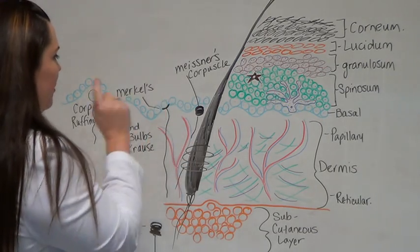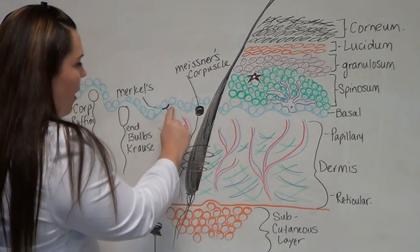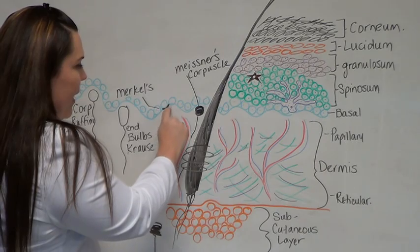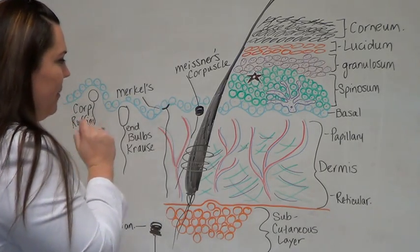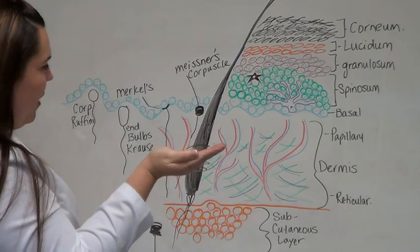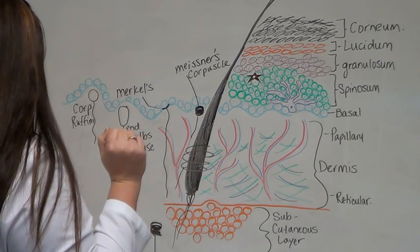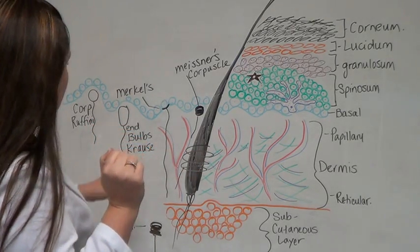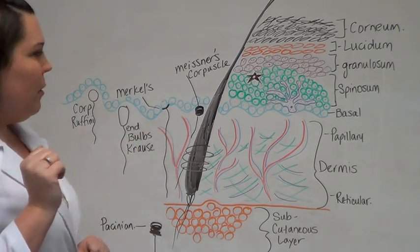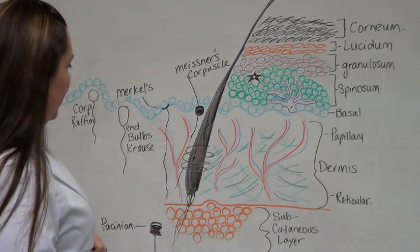Next we have the Merkel's disc. These are receptors that go right up to the epidermal-dermal junction, and it's a flat little disc-shaped nerve. This one is a receptor for touch. Any kind of touch, you're going to feel through Merkel's.